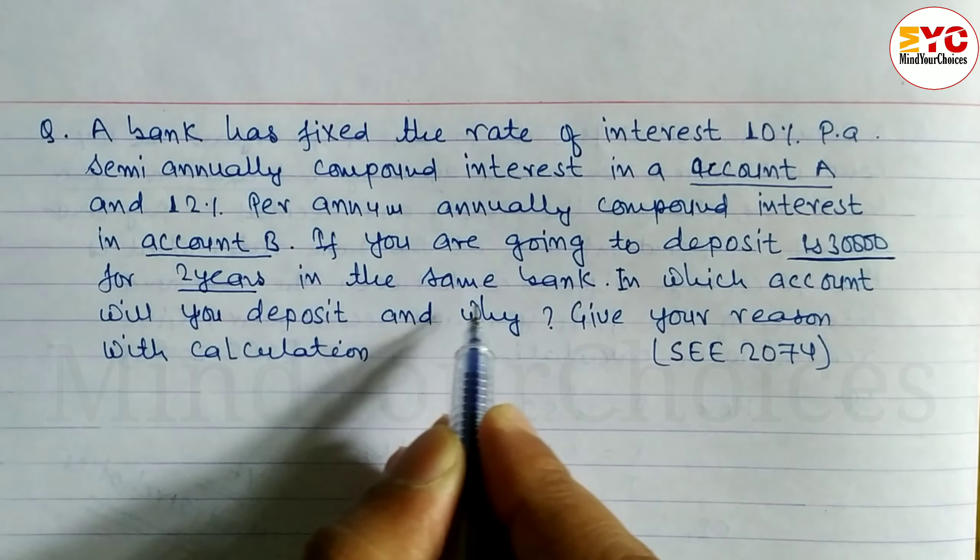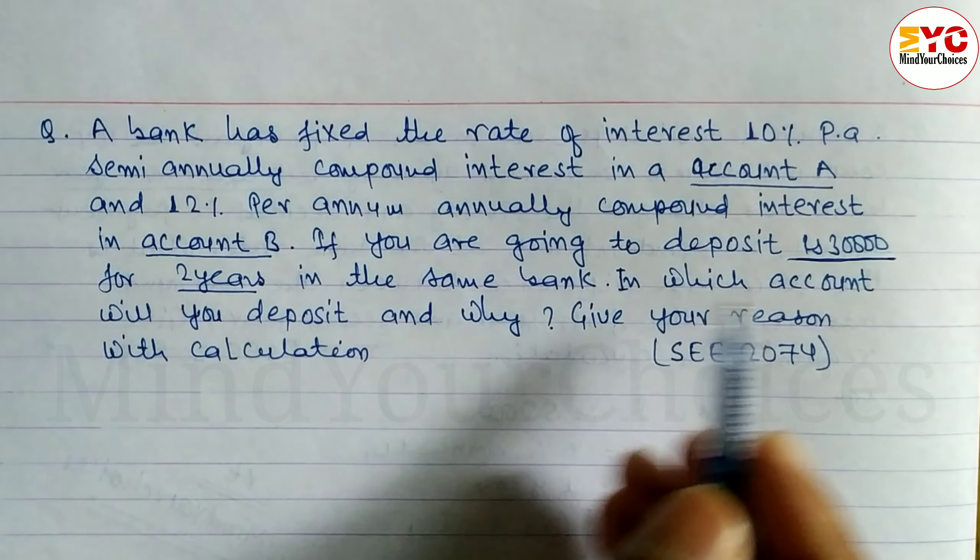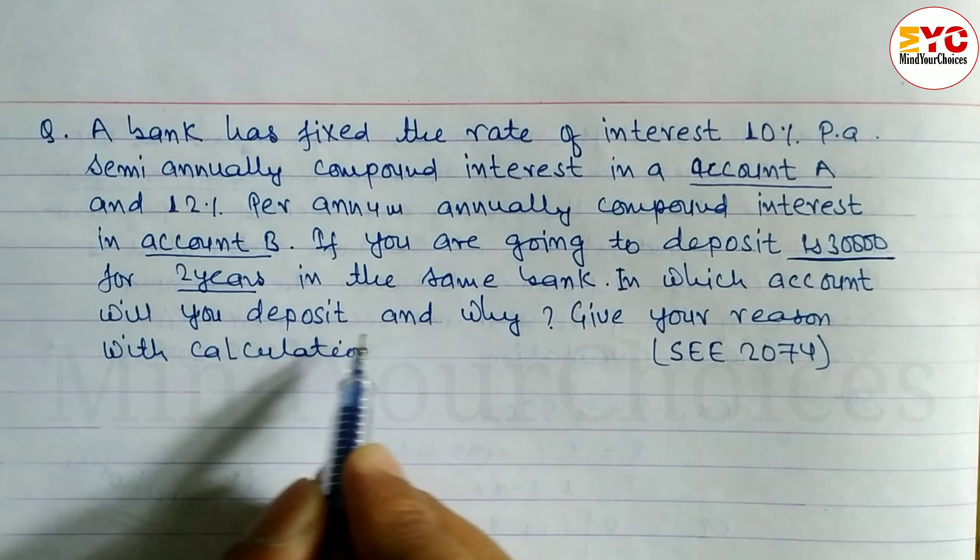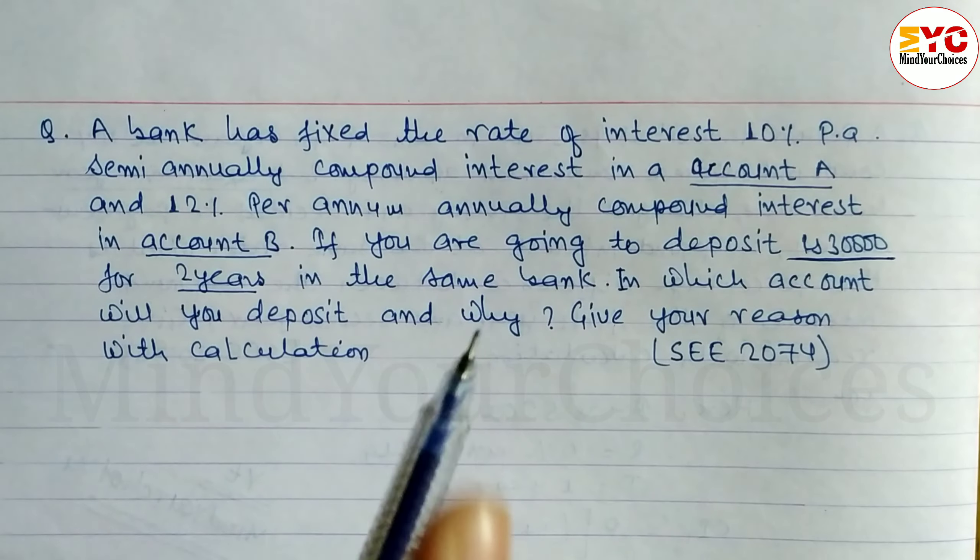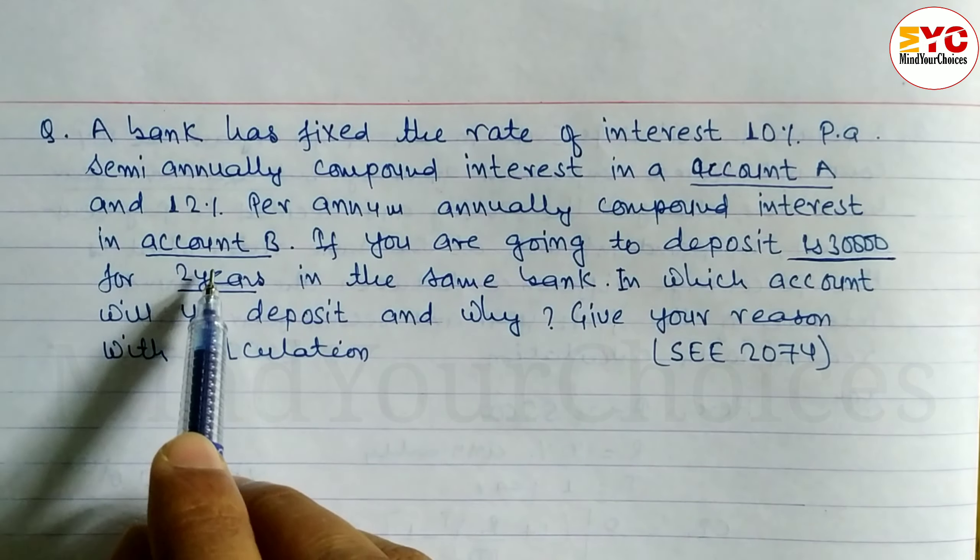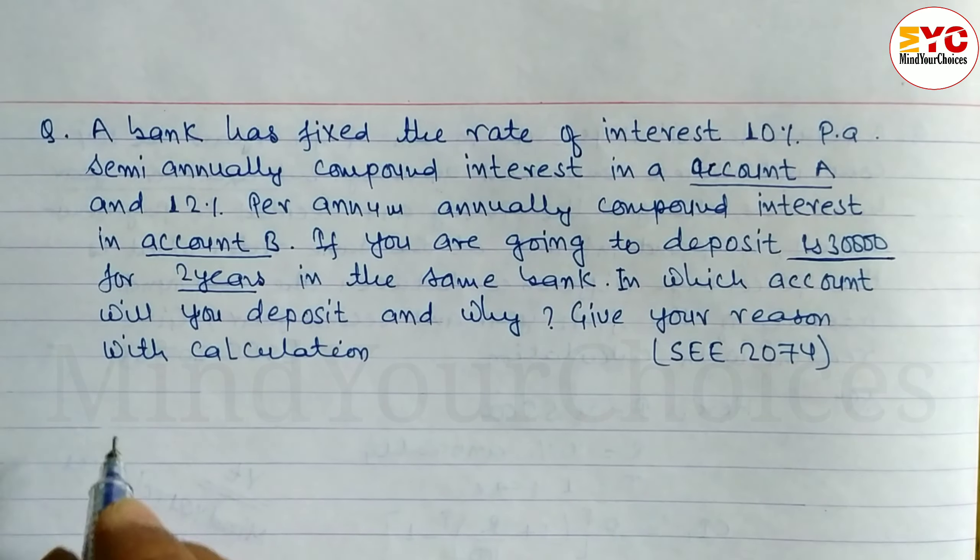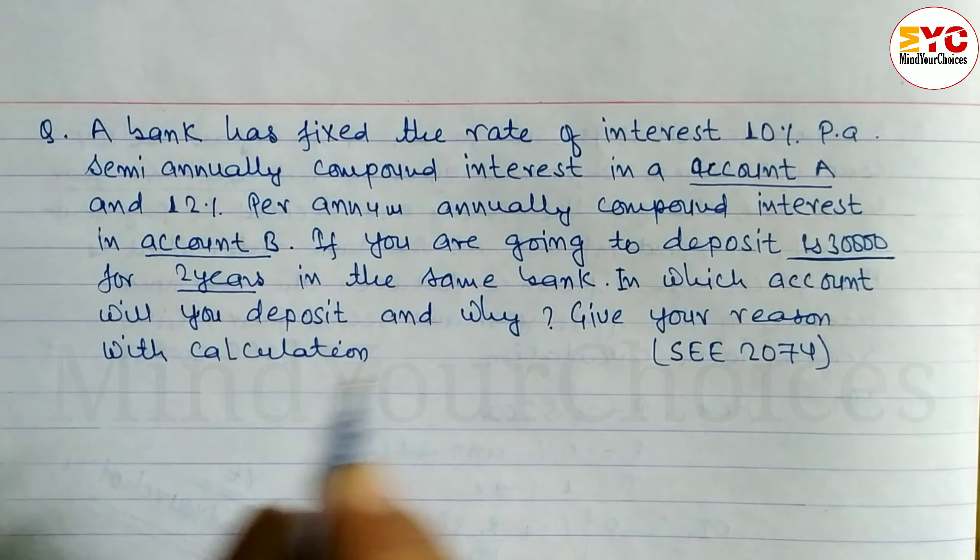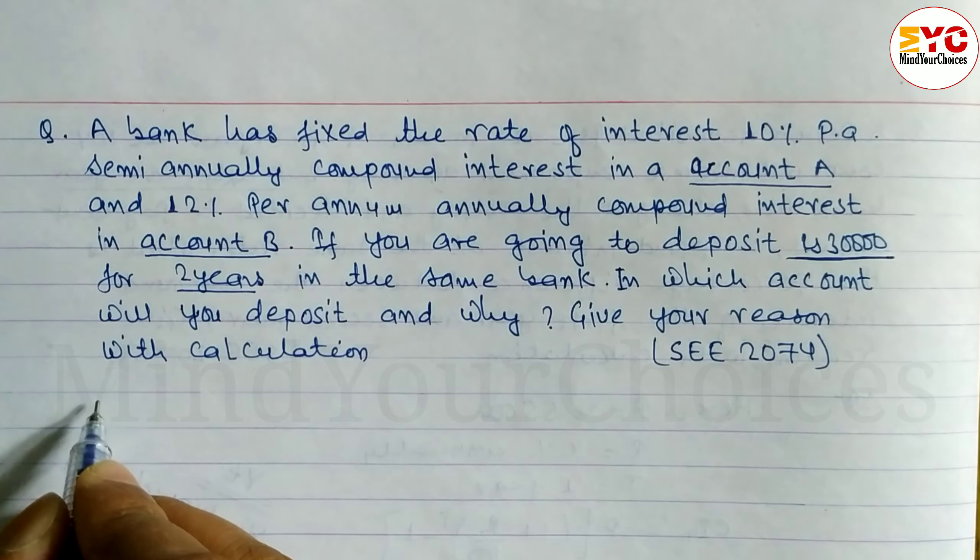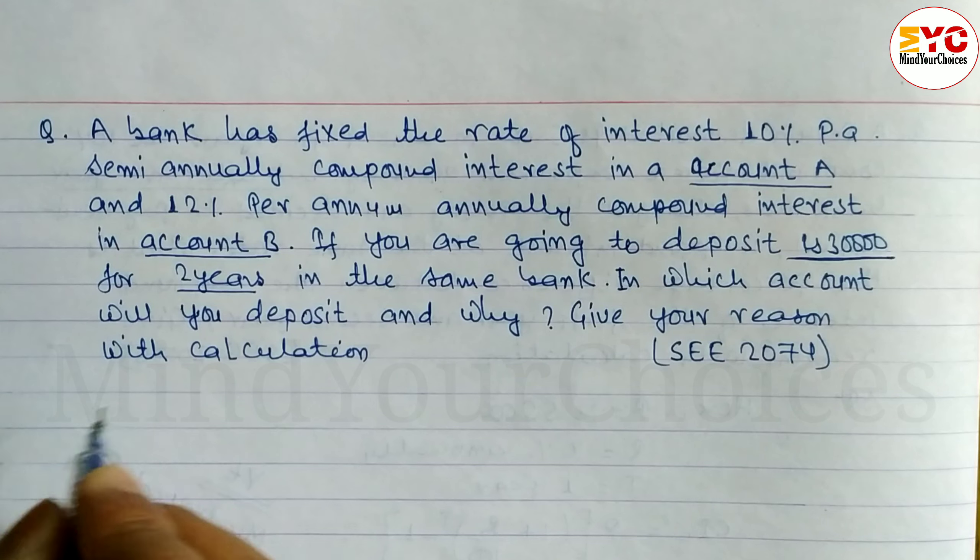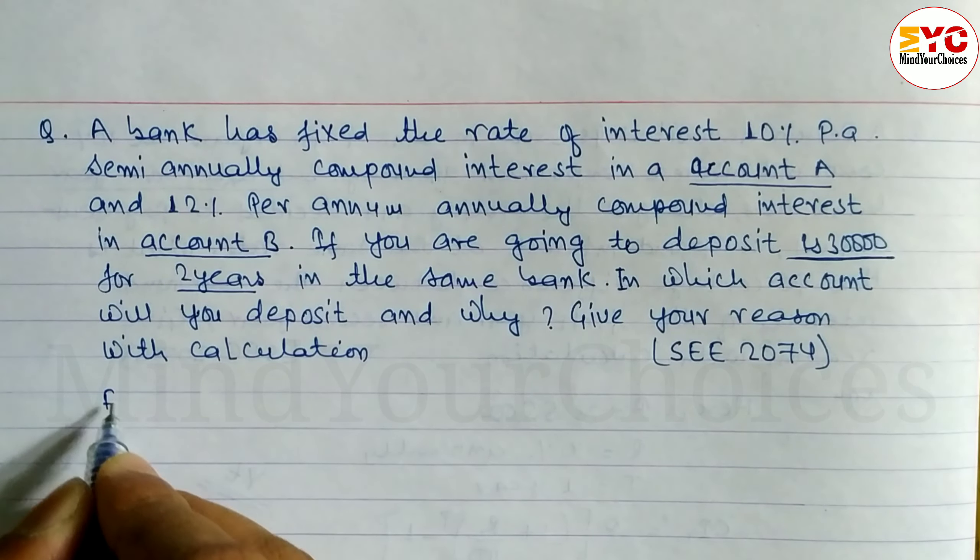Time is 2 years in same bank. In which account will you deposit and why? Two accounts in this bank, account A and account B. Account A has semi-annually compound interest, account B has annually compound interest. So in which account you are going to deposit to find out.